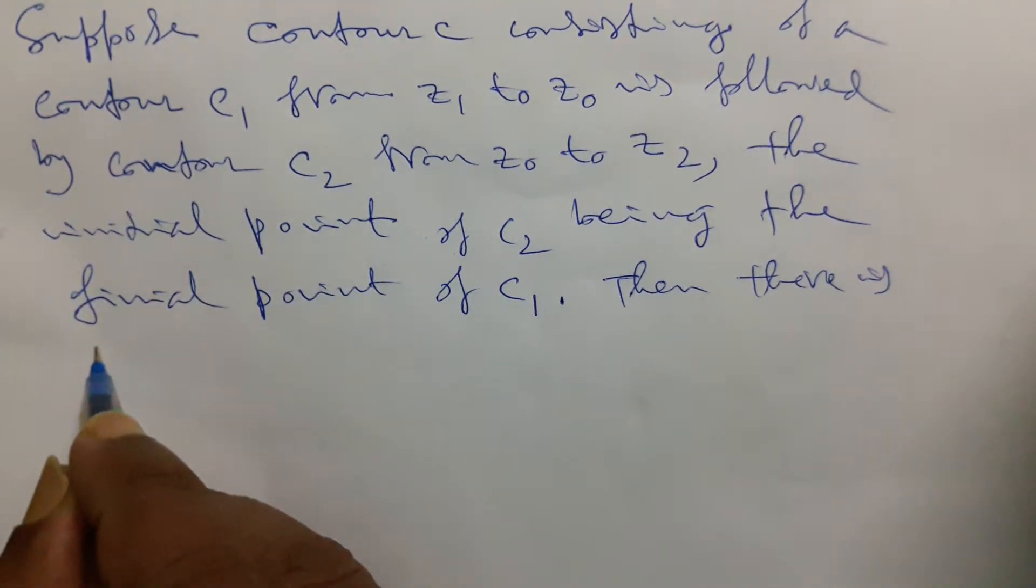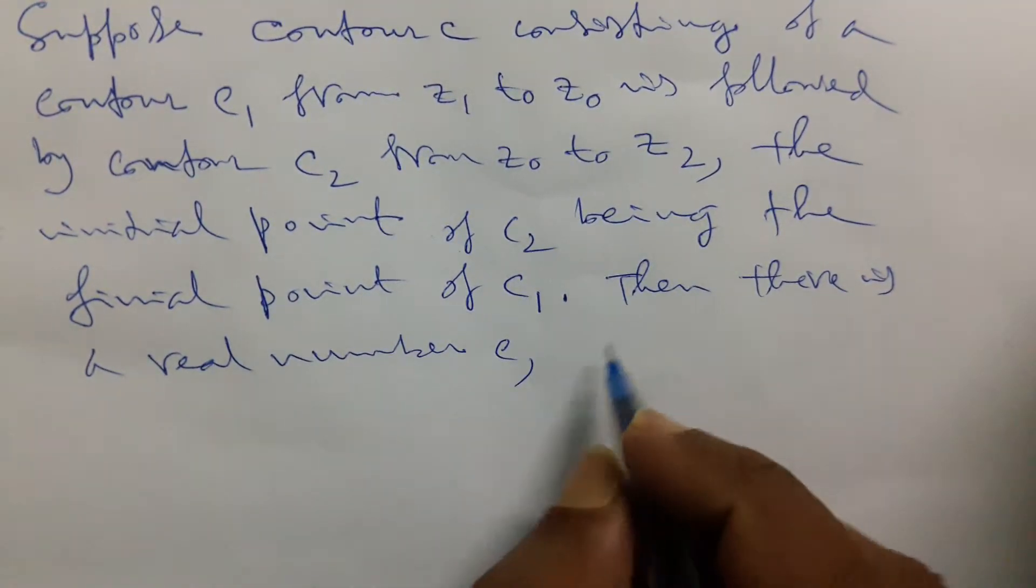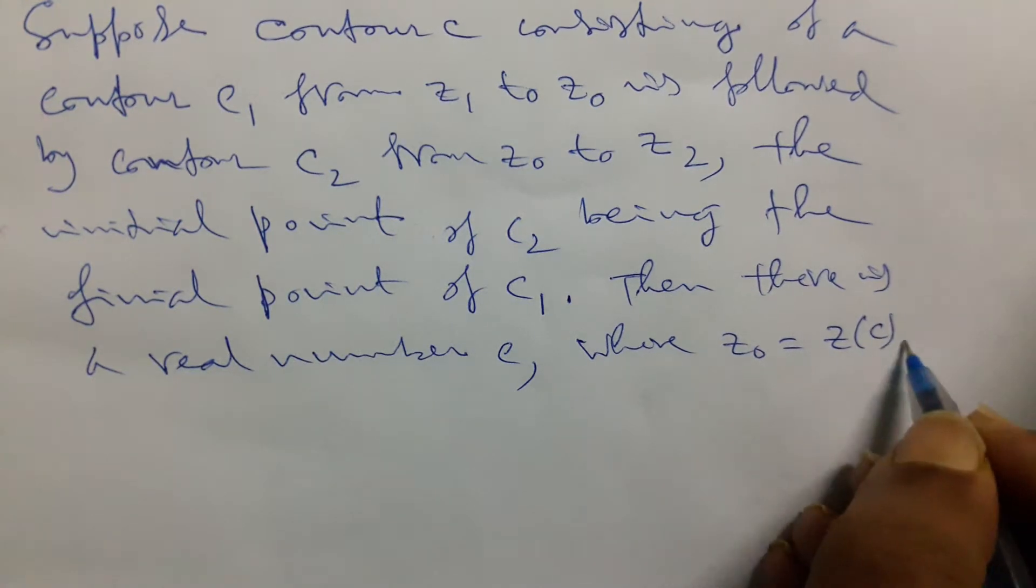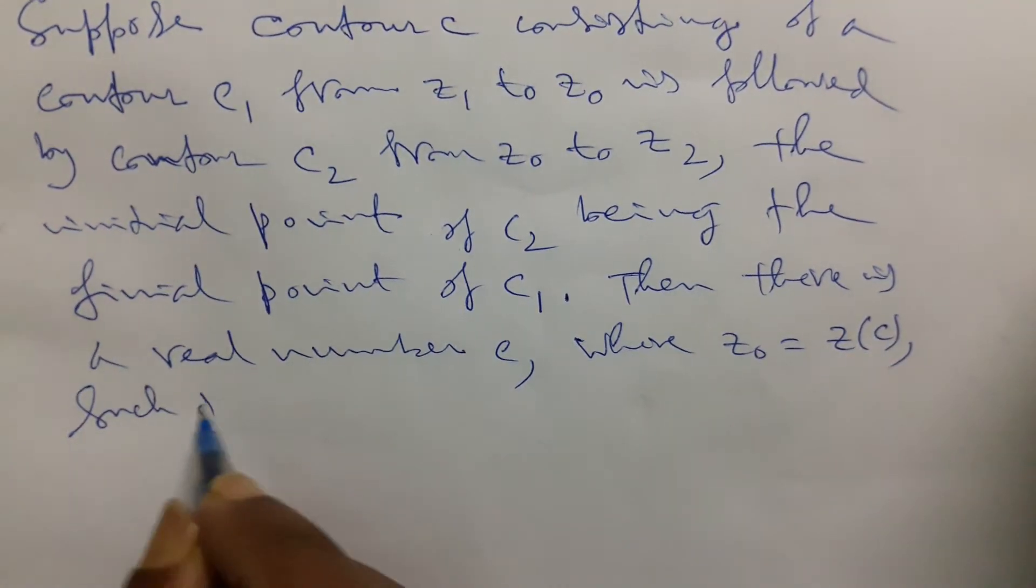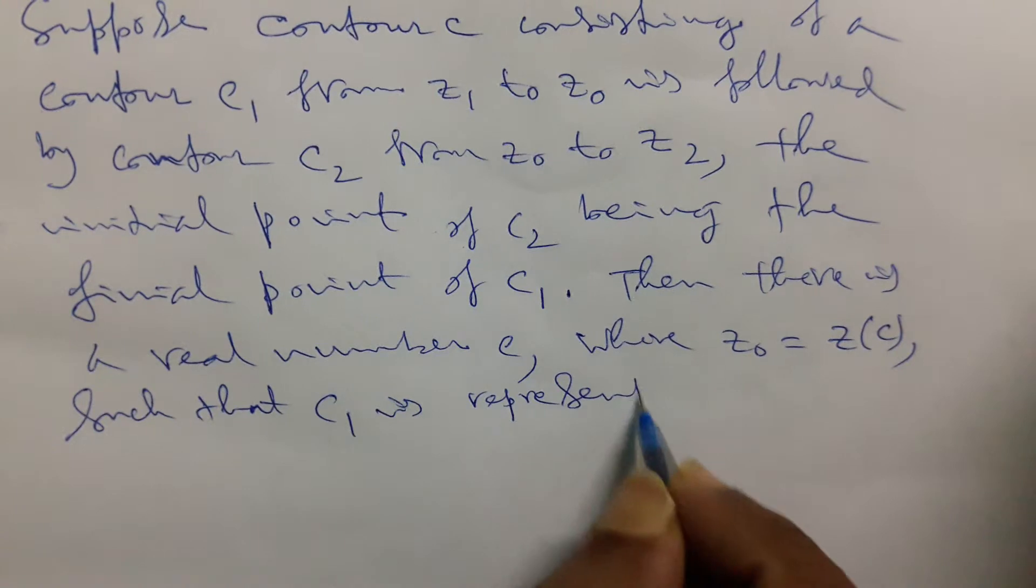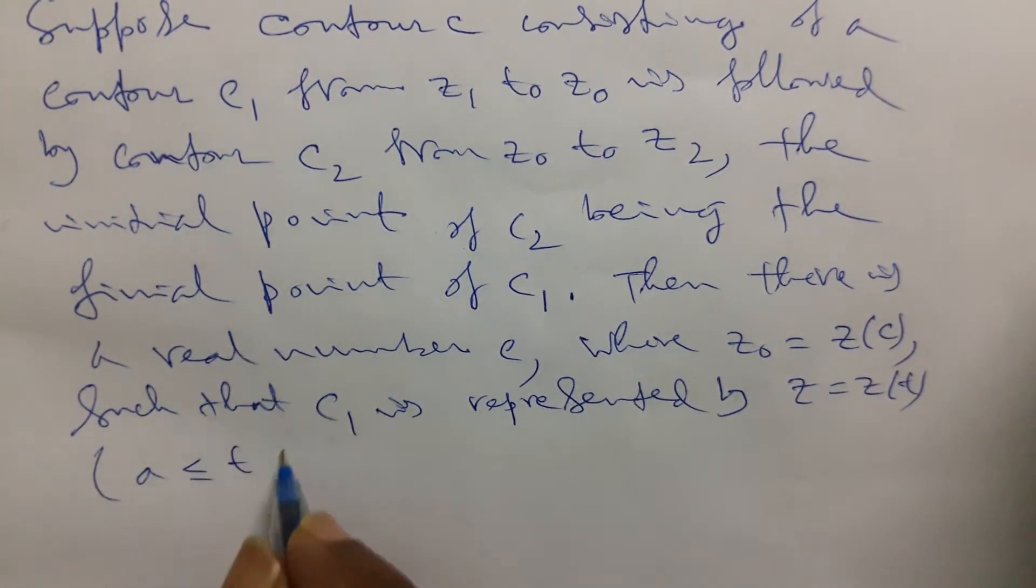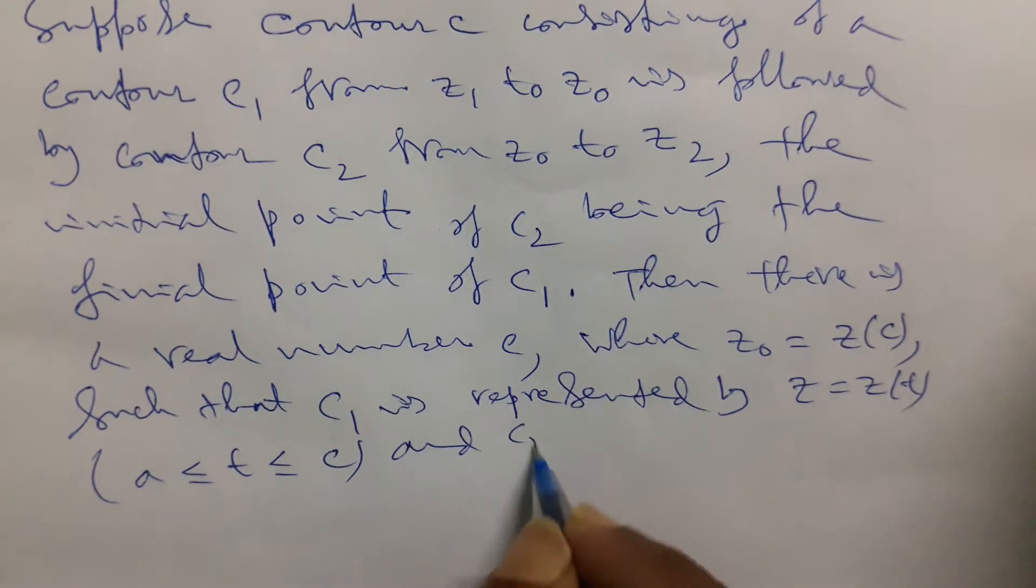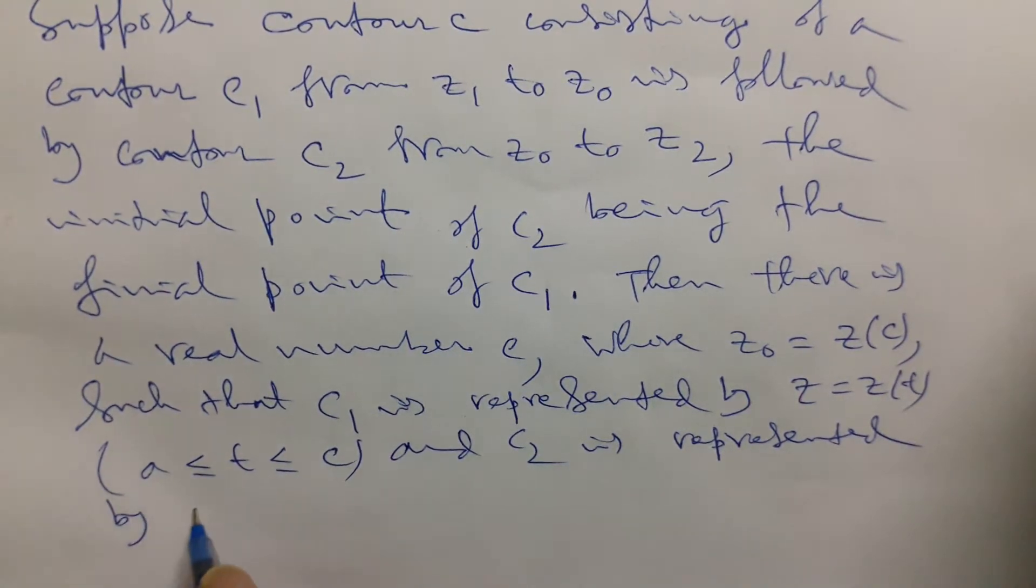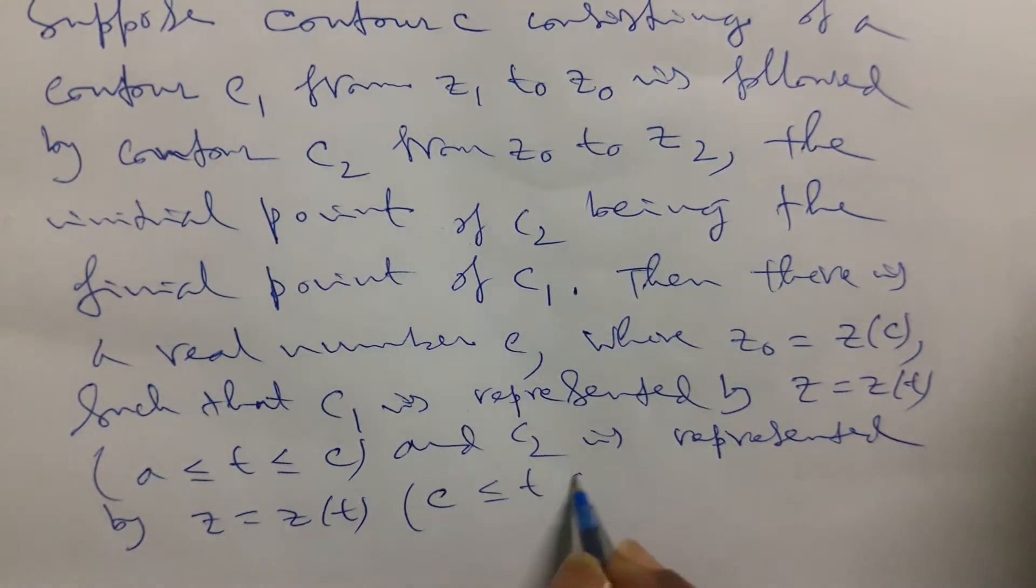Then there is a real number c where z0 equals z of c, such that C1 is represented by z equals z(t) for a less than or equals to t less than or equals to c, and C2 is represented by z equals z(t) for c less than or equals to t less than or equals to b.